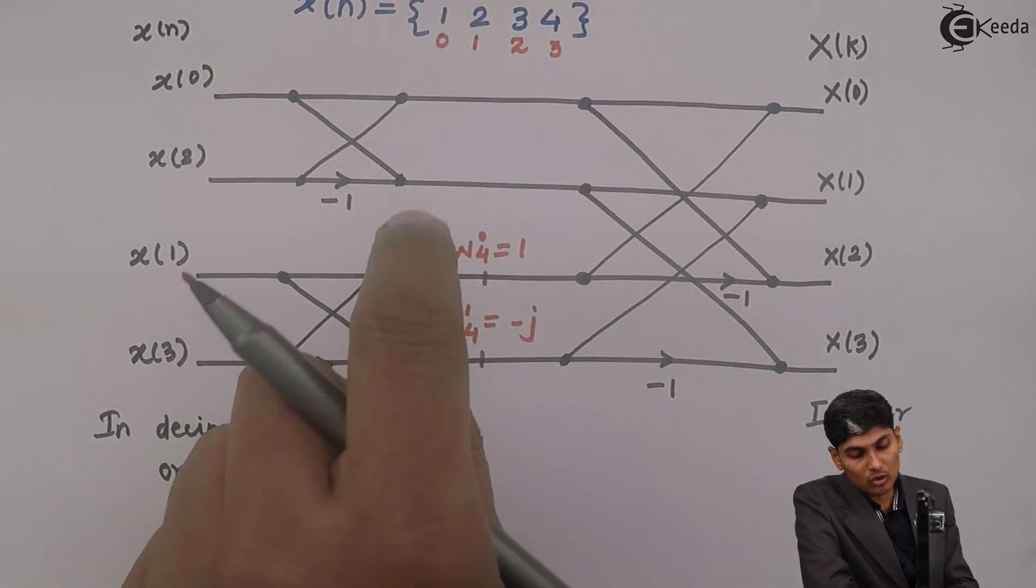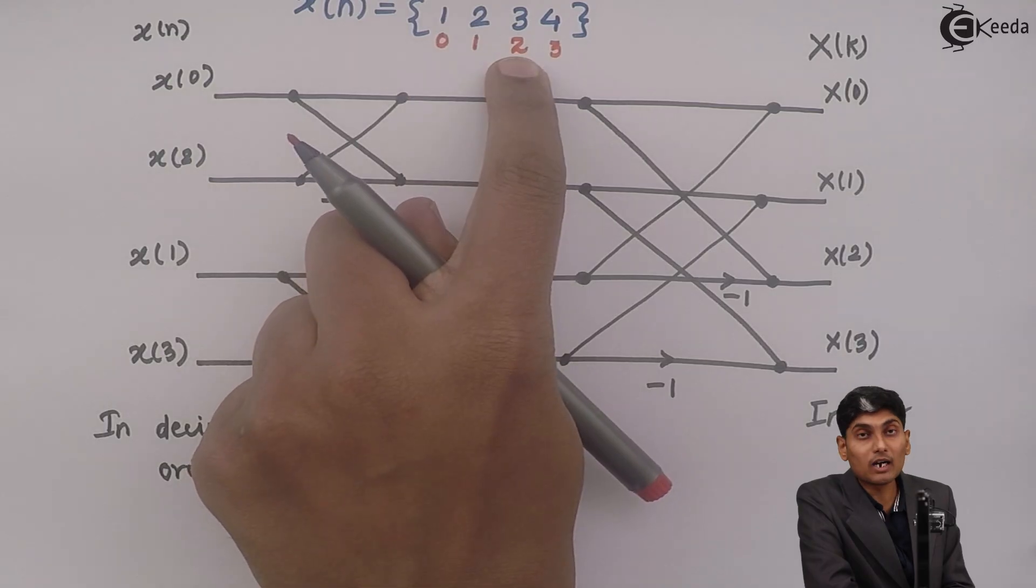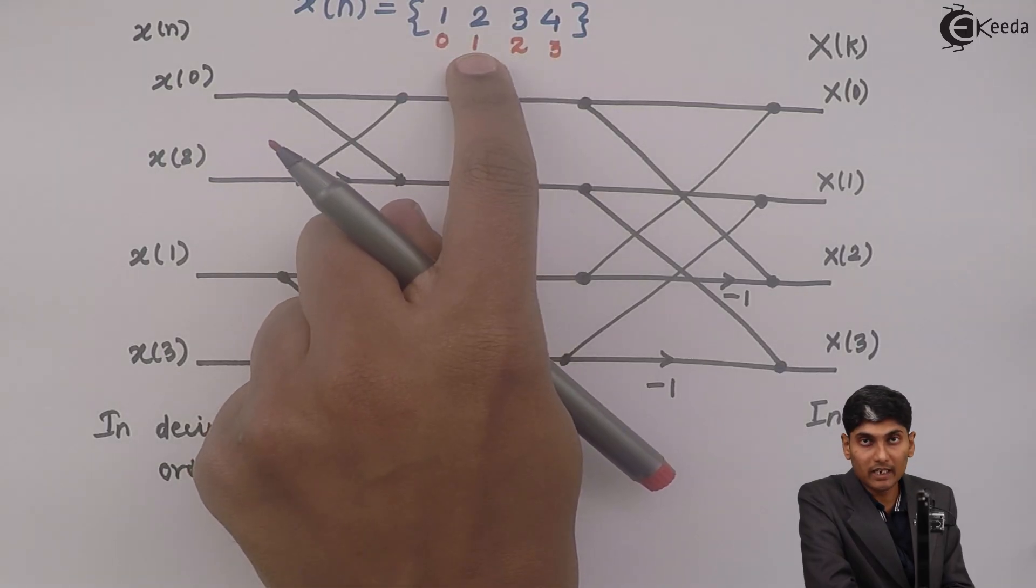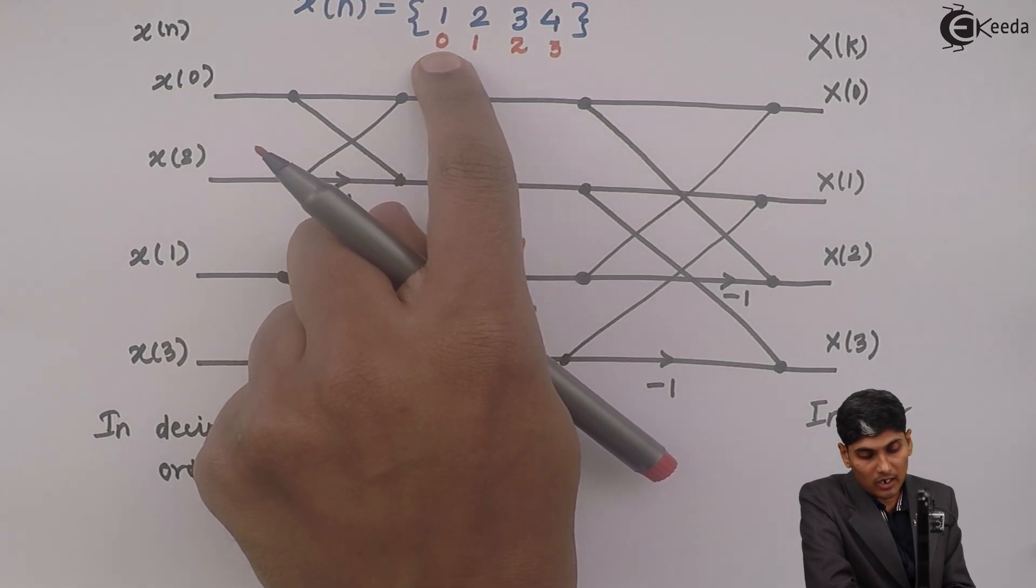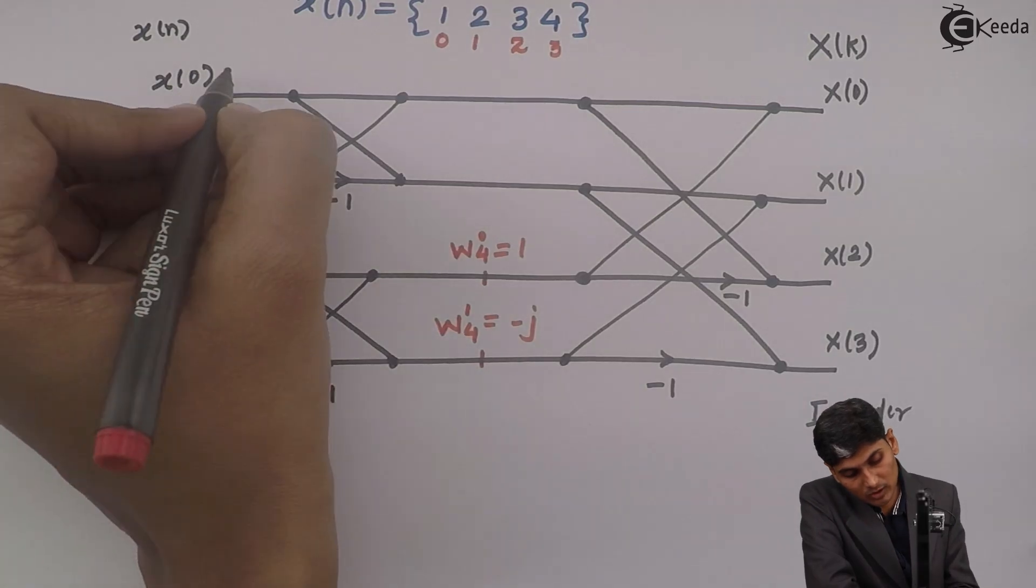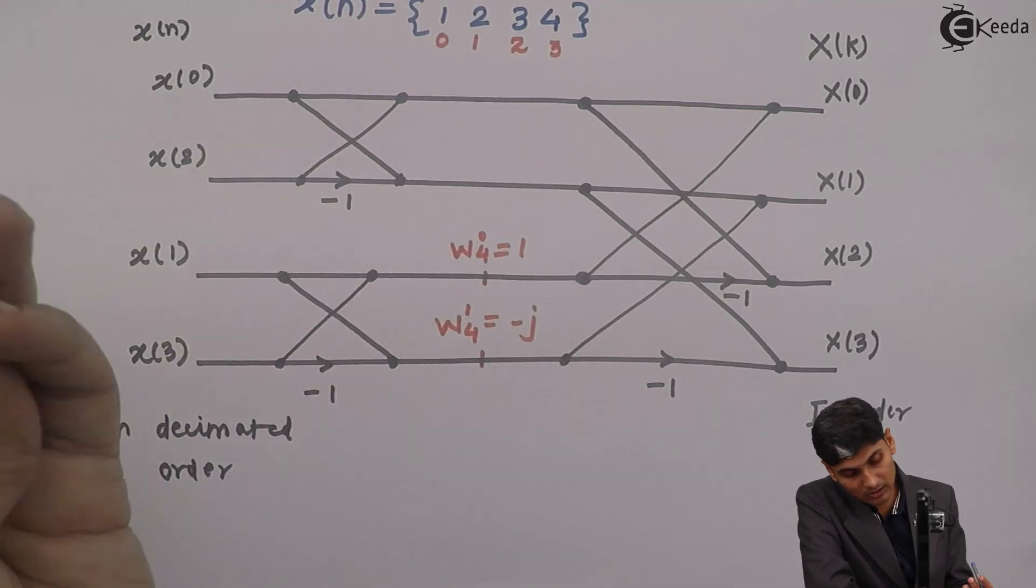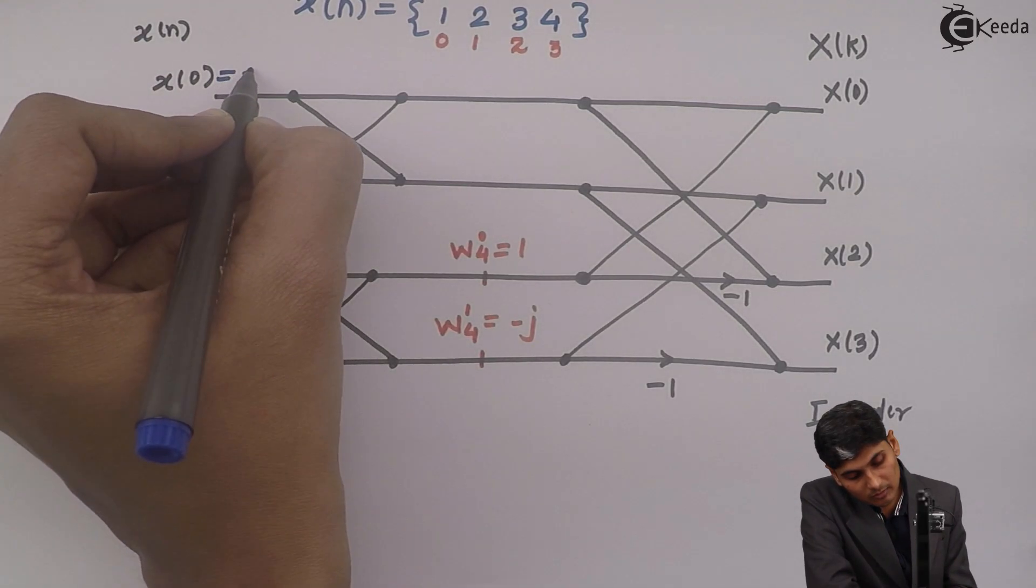So what we are going to do, I am going to split the even part of n and odd part of n because we are using DIT FFT. So I will use x of 0, I will put 1, so this is nothing but 1.